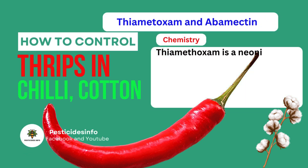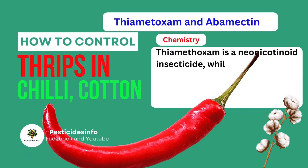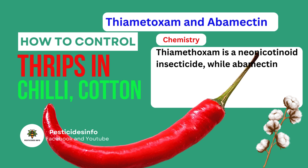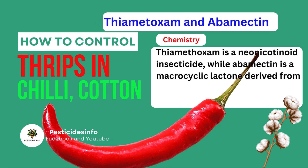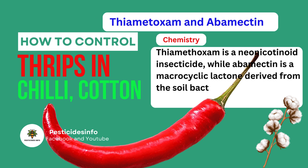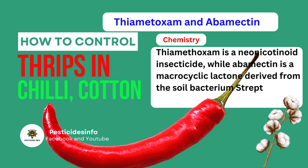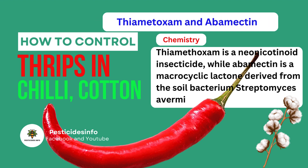Chemistry. Thiamethoxam is a neonicotinoid insecticide, while abamectin is a macrocyclic lactone derived from the soil bacterium Streptomyces avermitalis.